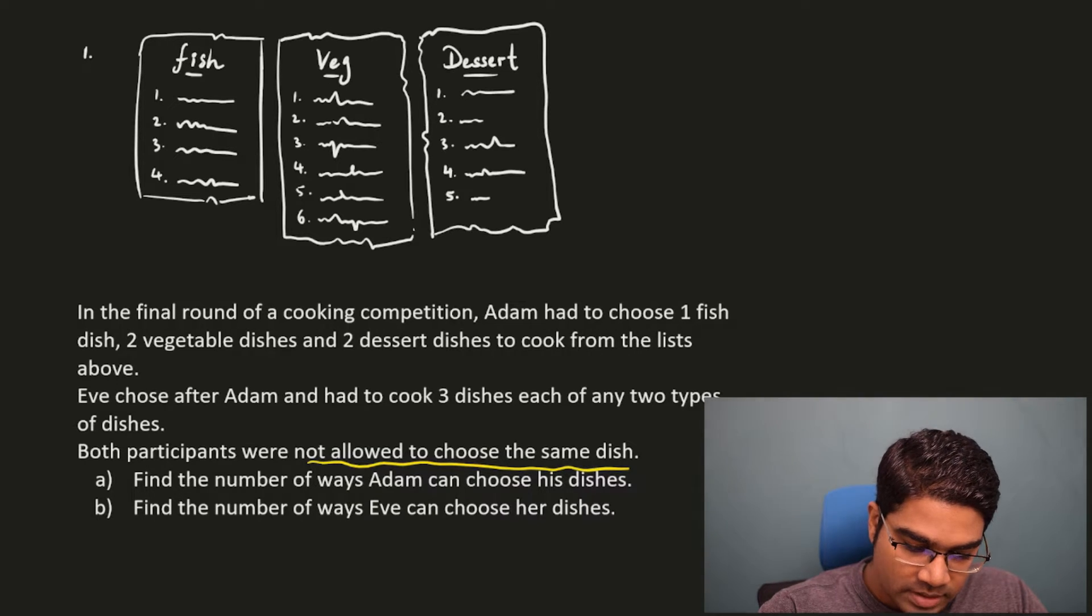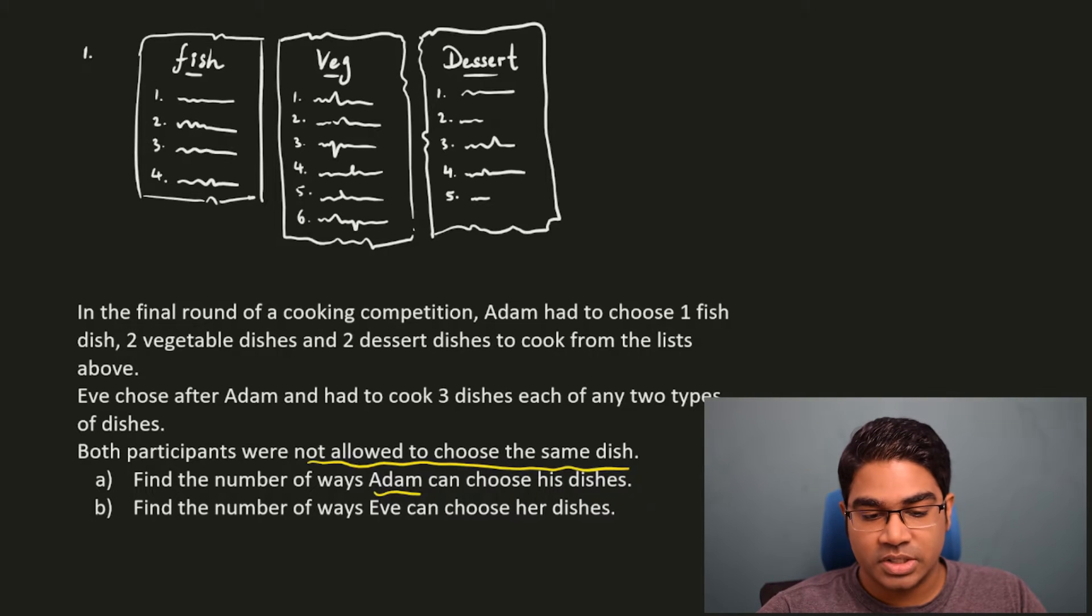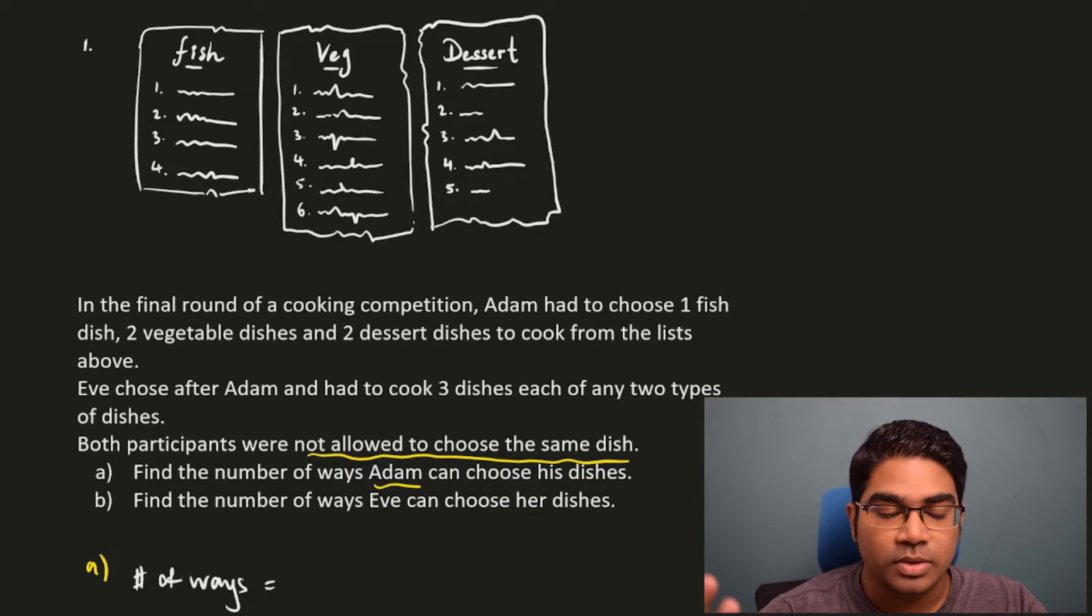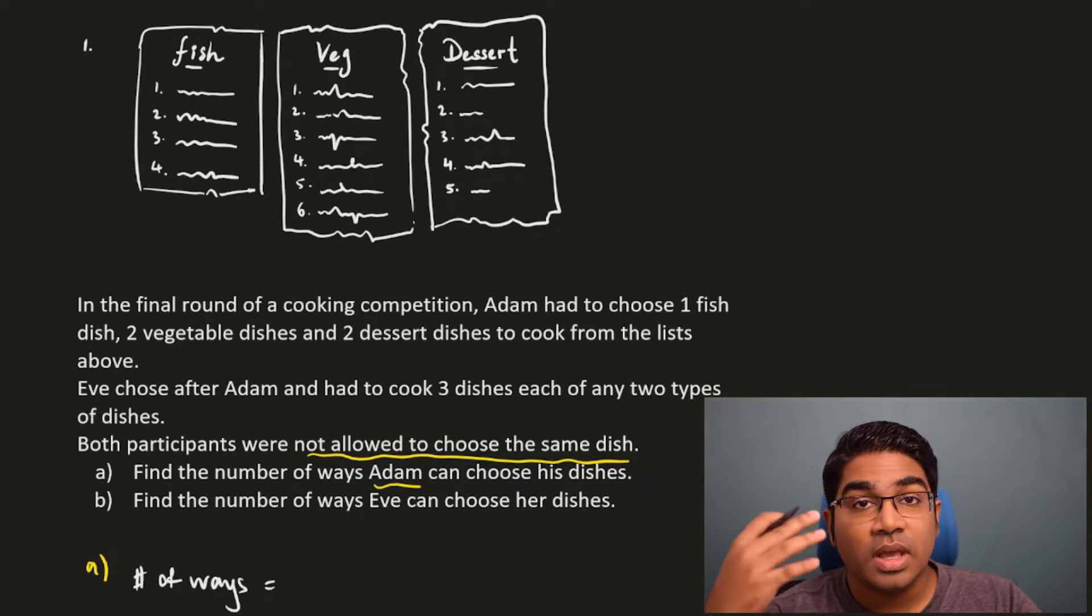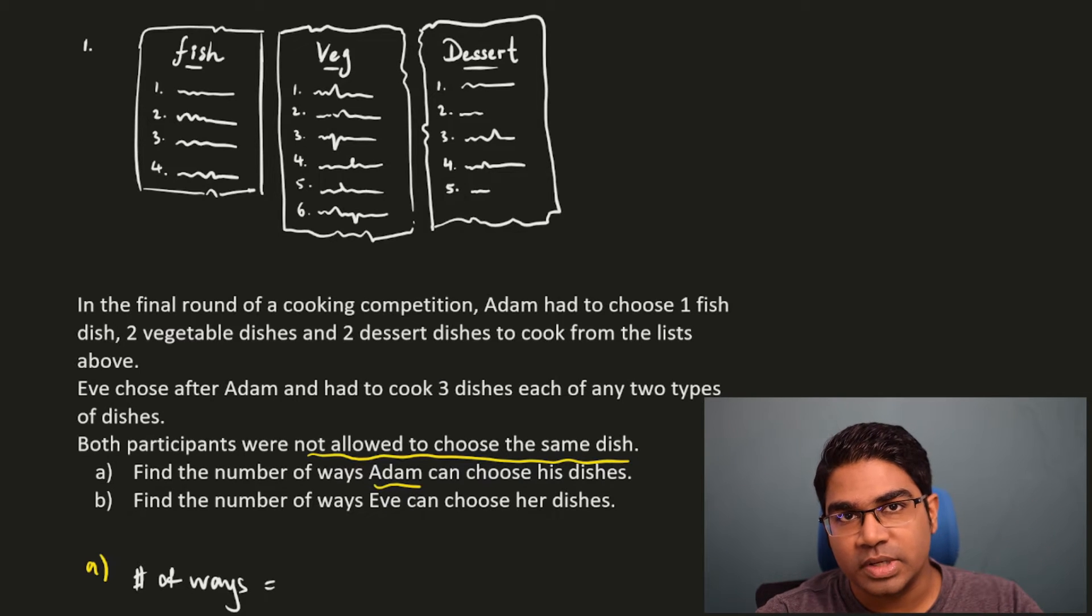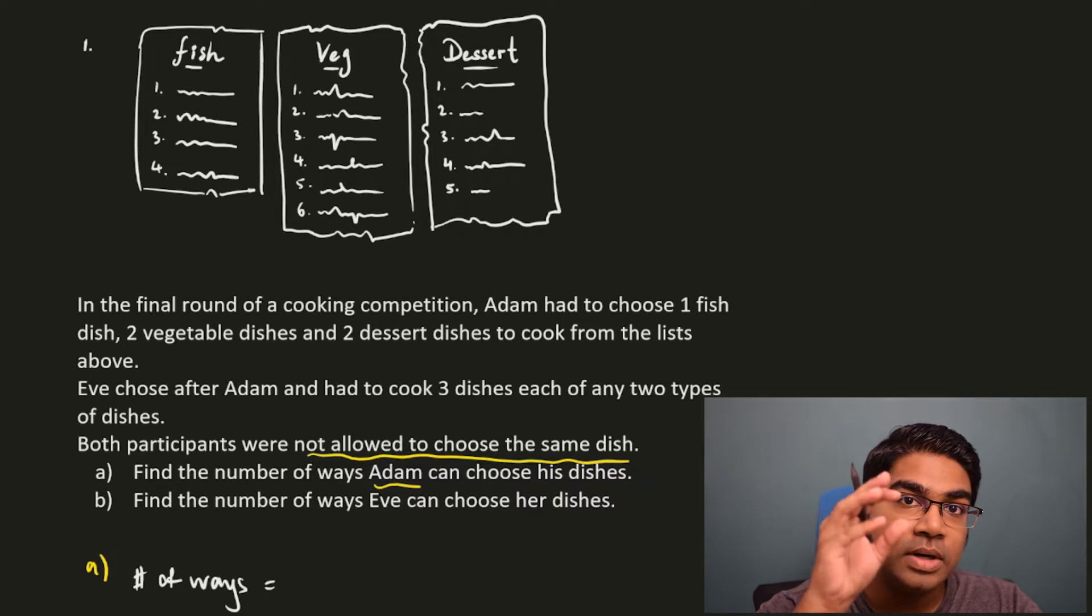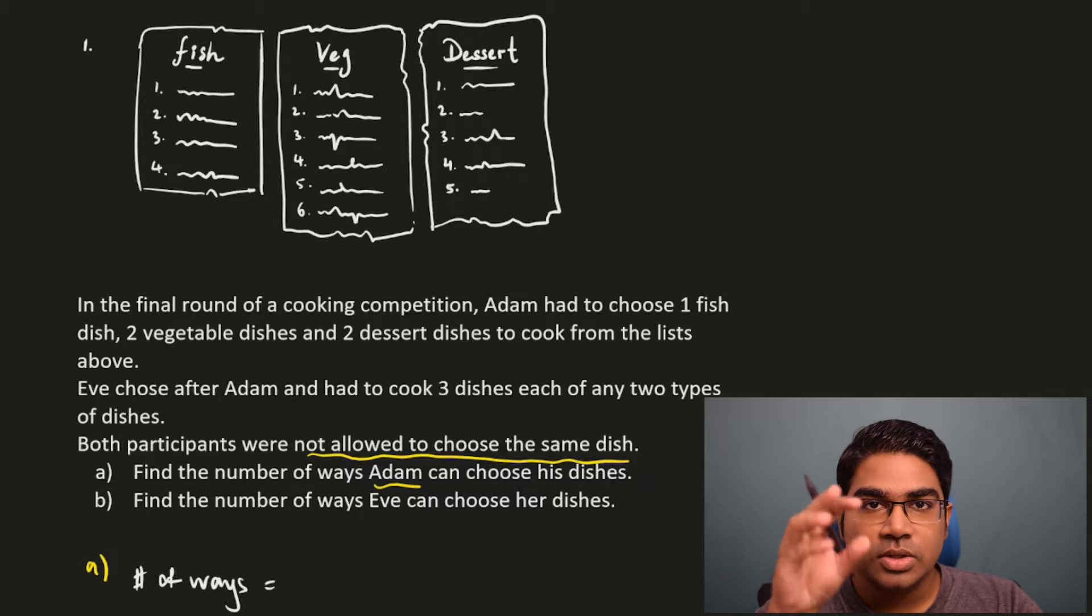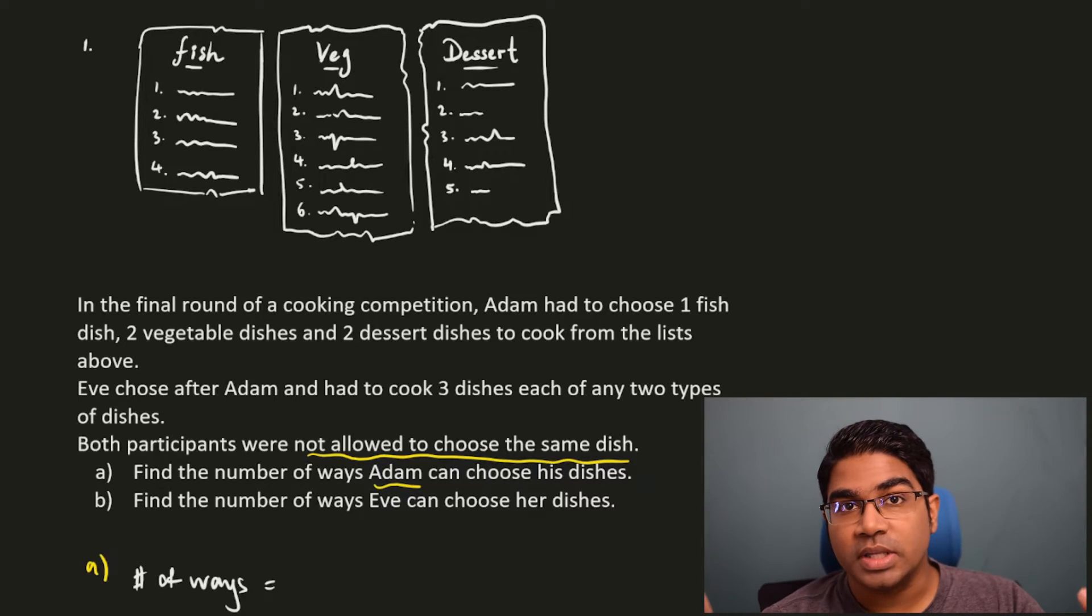Let's look at part A. Find the number of ways Adam can choose his dishes. Adam has first pick. There is no limit to his options. In this case we will be using combination instead of permutation, and the reason for this is we are only choosing. You are choosing from the list. There is no order here.